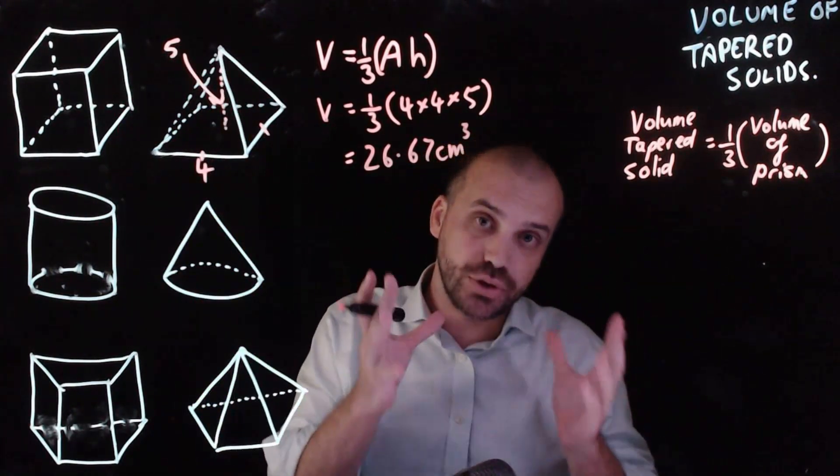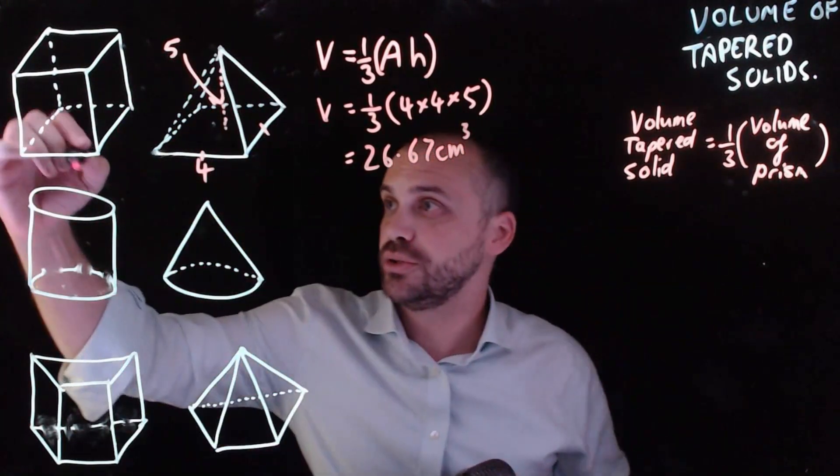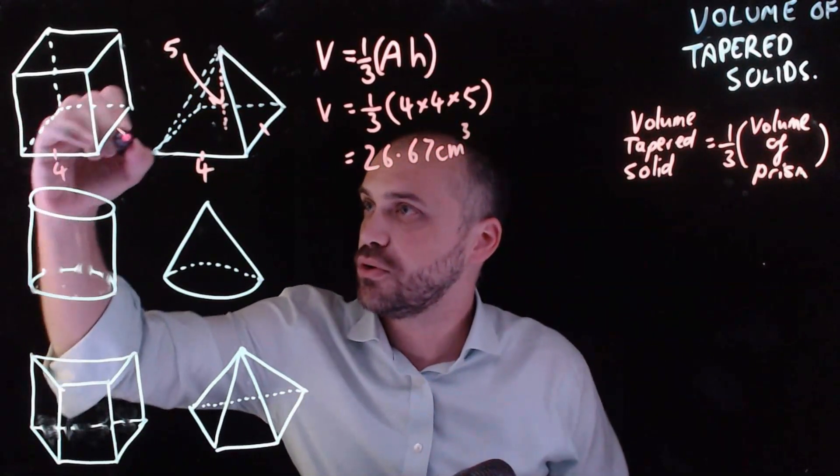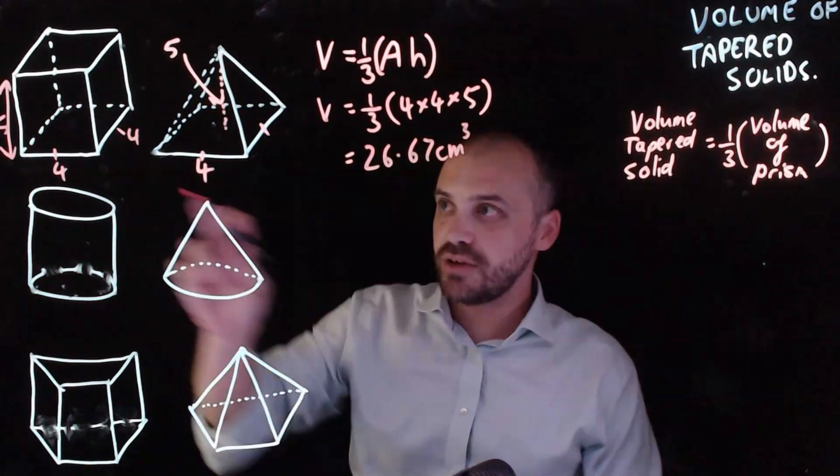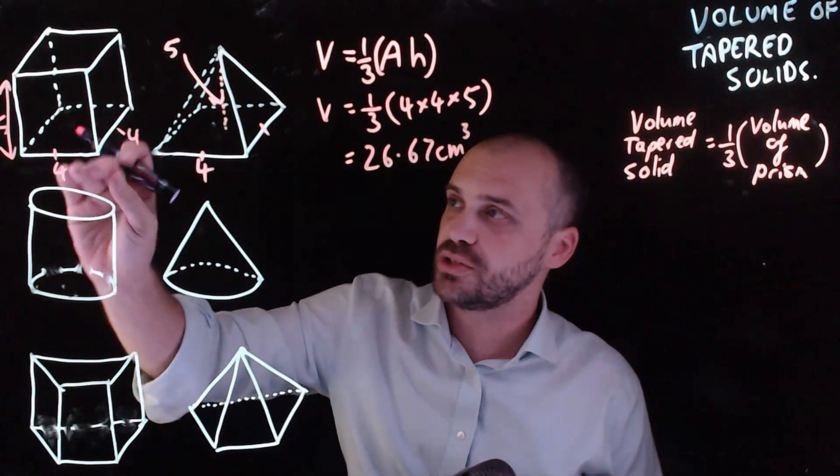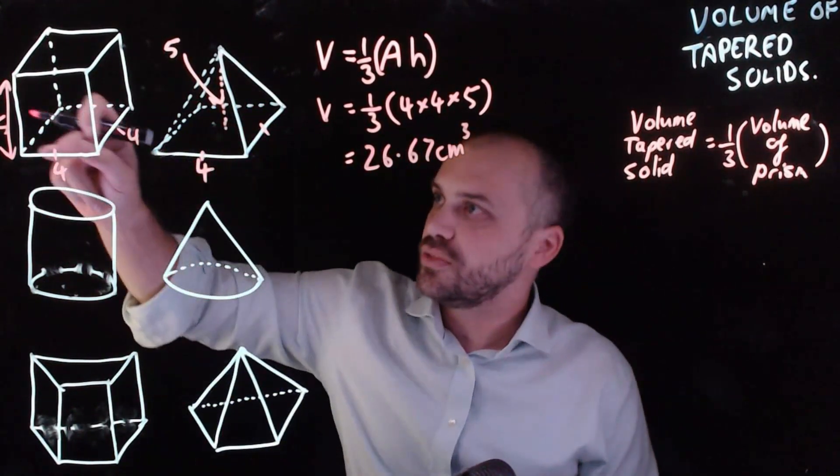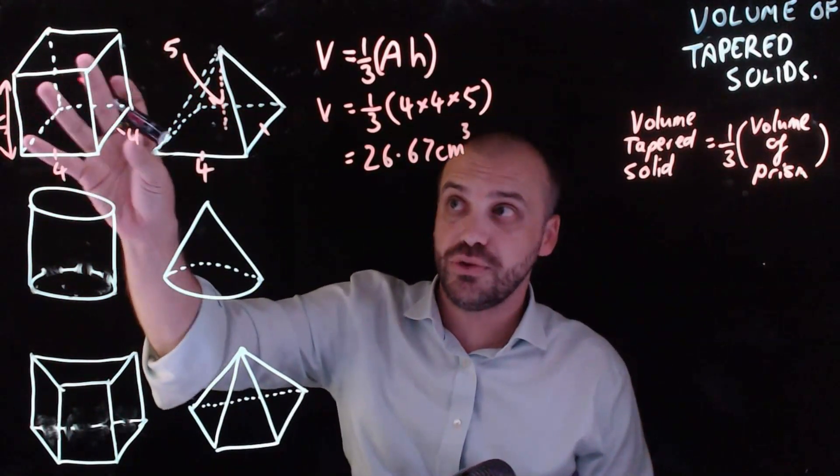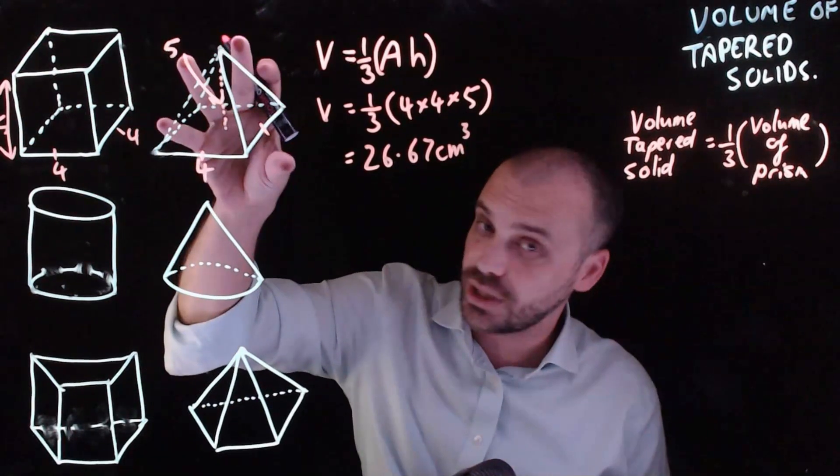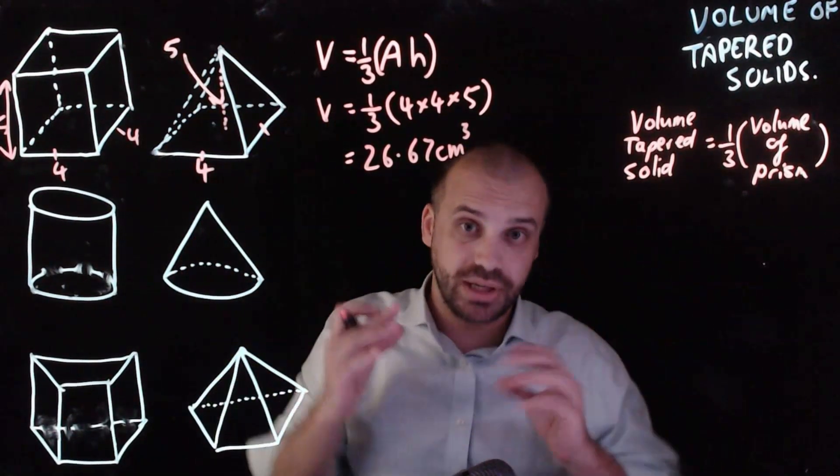Now, not to labor the point too much, but I really want to show you. This is four by four by a height of five. And so therefore, four times four is 16, times five is 80. The volume of this is 80 centimeters cubed. If you divide it by three, you'll get the tapered solid that can be contained within it.